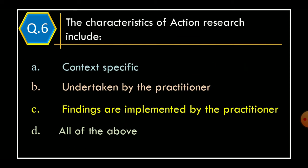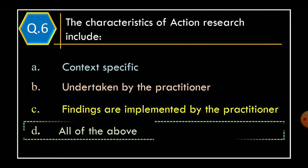Question 6: The characteristics of action research include. Option A: context specific. Option B: undertaken by the practitioner. Option C: findings are implemented by the practitioner. Option D: all of the above. And correct option is Option D: all of the above.